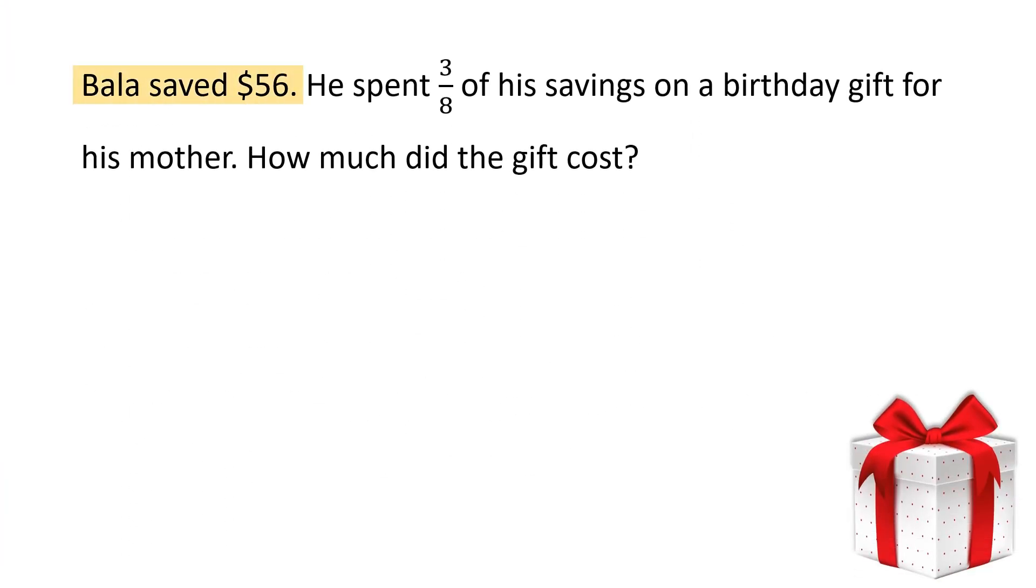Bala saved $56. He spent 3 by 8 of his savings on a birthday gift for his mother. How much did the gift cost? So, what were the savings of Bala? Bala, he had $56 and he spent 3 by 8 of this savings to purchase a gift for his mother. So, let's find out what is 3 by 8 of 56. 8 ones are 8. 8 sevens are 56. 3 times 7. So, Bala spent $21 to purchase a gift for his mother.